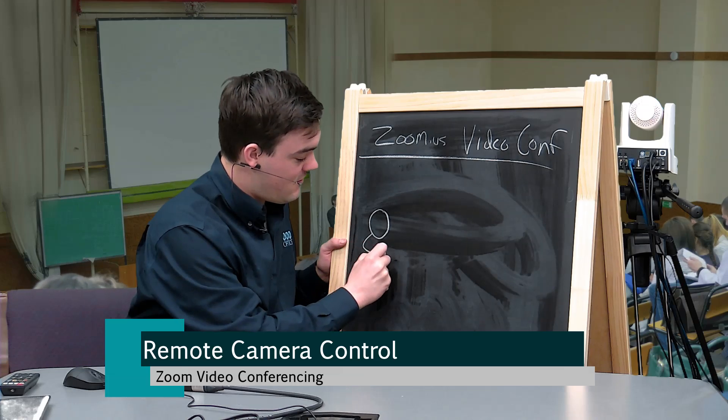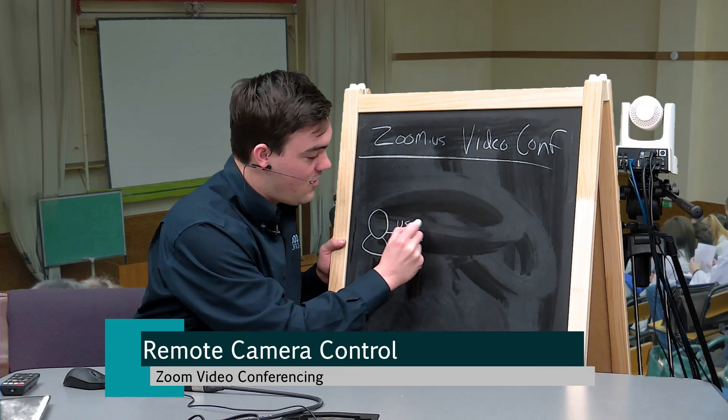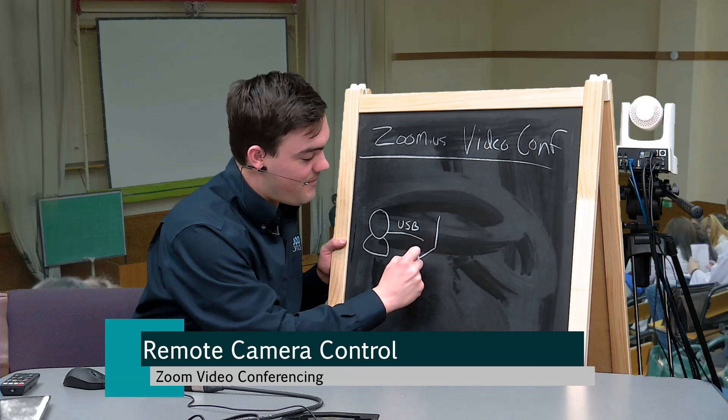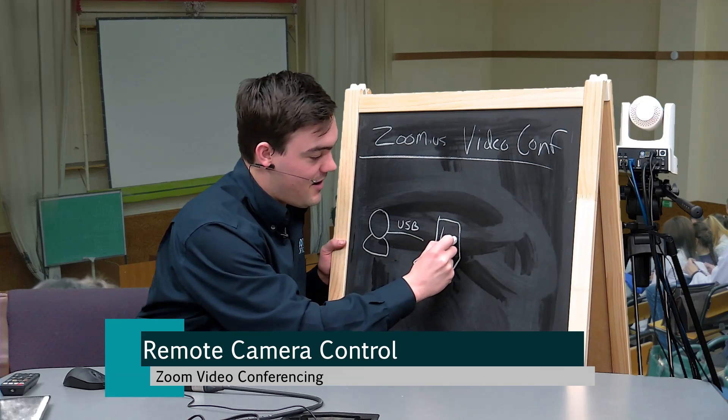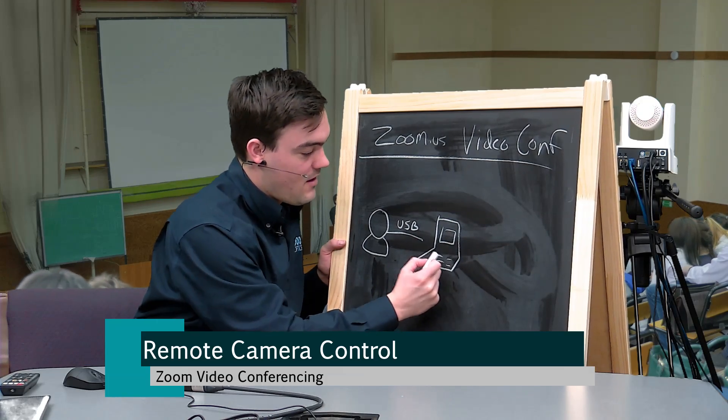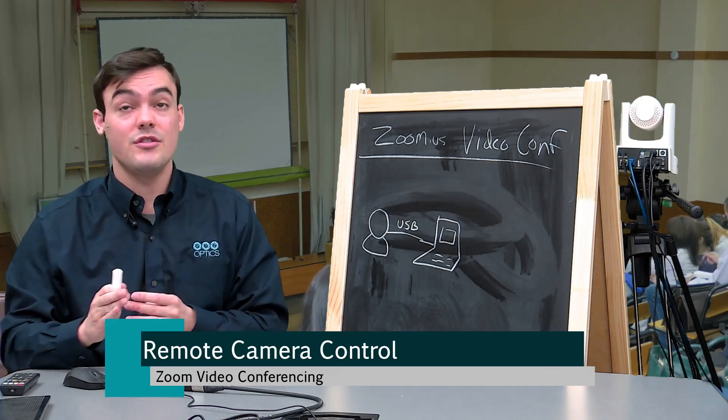Basically you've got the camera. I'm just going to draw the camera like this. The camera is connected via USB to, let's just say, a laptop. I'm so bad at drawing laptops, but there's my laptop. It's connected via USB. That's all you need.